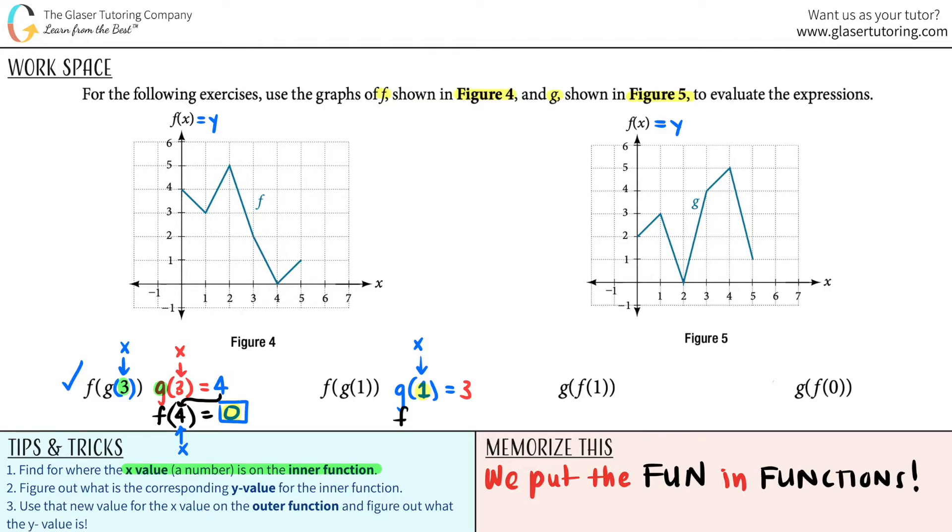The outer function is f, because it's literally outside the parentheses. And what number is going to be in here? It's the answer to the other function. And now since it's in parentheses, that's your new x value. Now we got to go to the f graph. 3. Graph's all the way up here, right? So I shot all the way up here. And what's the corresponding y value? 2. And there is your answer. Pretty cool, right? We got two answers real quick. This is fun.